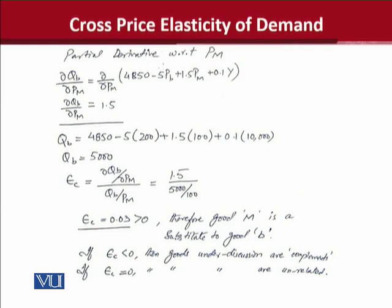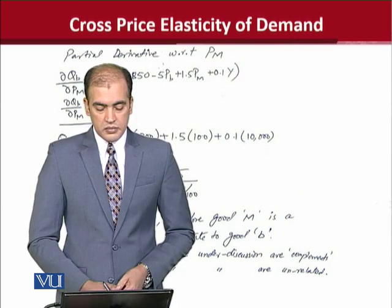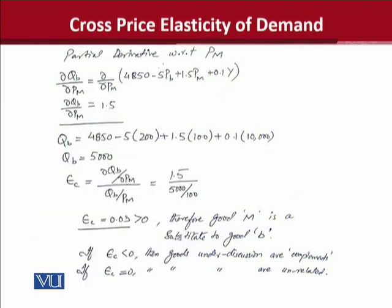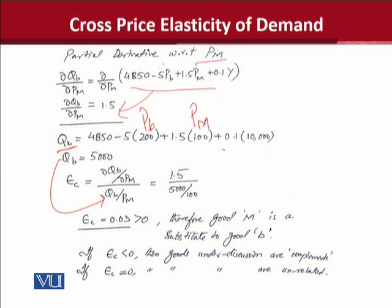Now we shall take the partial derivative of the demand function with respect to the price of mutton, represented by Pm. You can calculate this derivative and verify the answer — it comes to 1.5 — which you can do by pausing the video. We then find the value of Qb by substituting the price of beef, the price of mutton, and the value of income into the demand function to get a numerical value of Qb, which is then substituted into the formula to get the result.